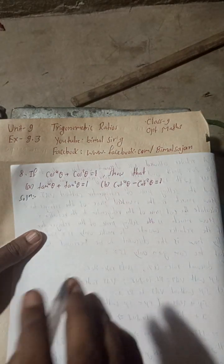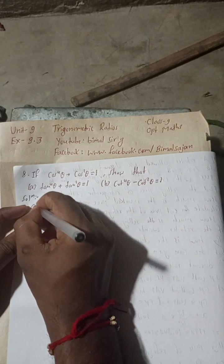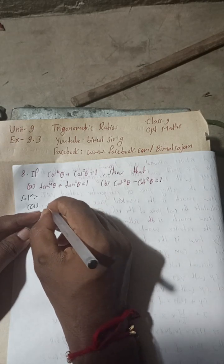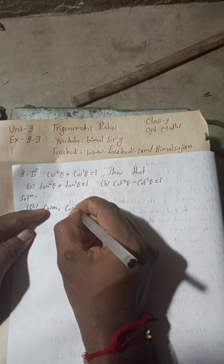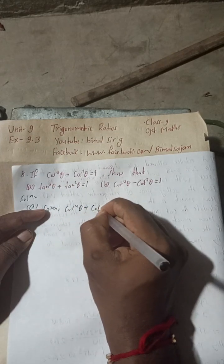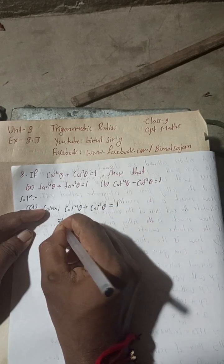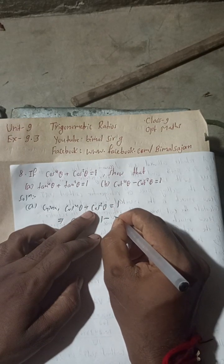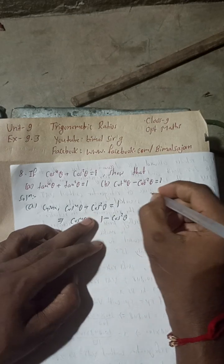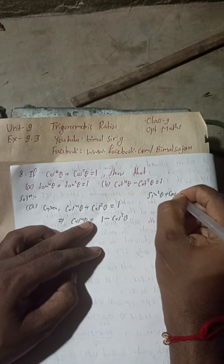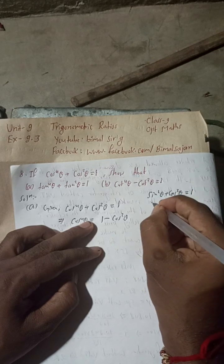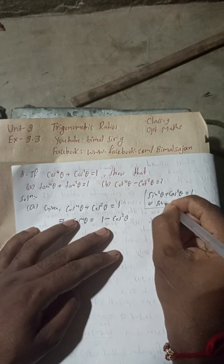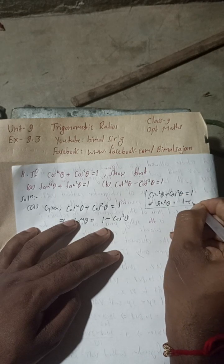Let's begin the solution for part (a). What is given here? Given: cos⁴θ + cos²θ = 1. This implies cos⁴θ = 1 - cos²θ. Now we have the formula sin²θ + cos²θ = 1, which implies sin²θ = 1 - cos²θ.